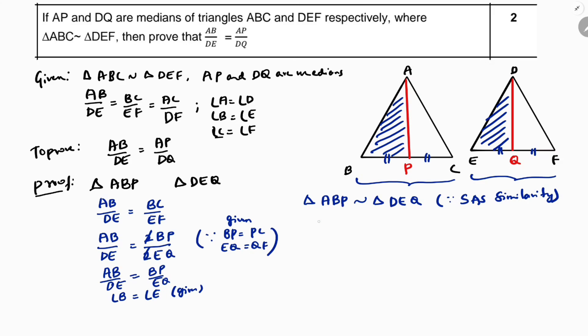So, now if I will write the sides for this, I will get very clearly AB by DE. Here first two, here first two. BP by EQ. Second, second. And AP by DQ.